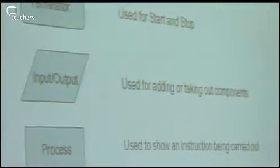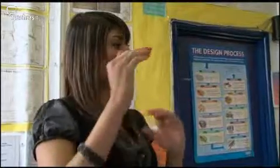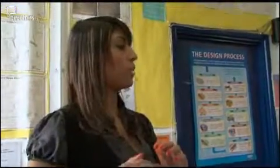A diamond shape is what you call a decision. Anyone know what a decision is? It's like a choice you have to make. A choice that you have to make. Everybody has choices. If you don't make a choice, then there's no right or wrong or you can't move forward.